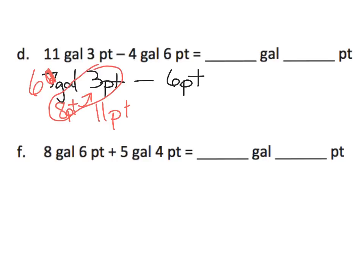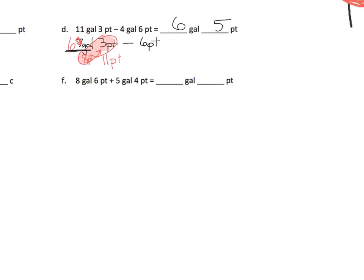So all together we now have six gallons and eleven pints. We're supposed to take away six pints — eleven pints take away six pints gives us five pints, and we have six gallons left. So the answer is six gallons and five pints. Now I'm going to show another way to do that same problem.